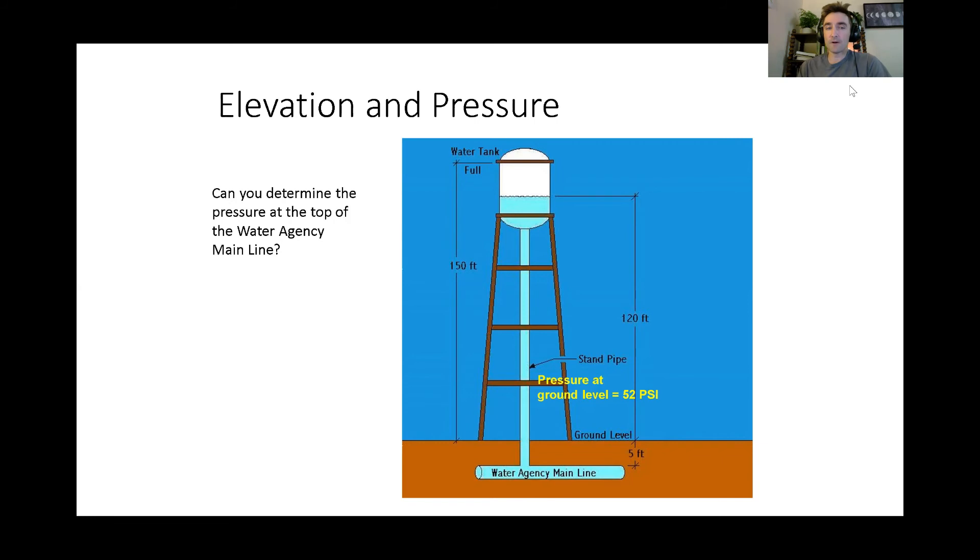And we know that the water agency main line is 5 feet underground. So therefore, can you determine the pressure at the top of the water agency main line? 54.125 psi. Now, can you determine the pressure at the top of the water agency main line if the tank was filled to the full level? 67.115 psi.